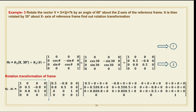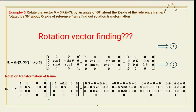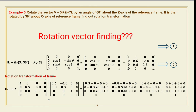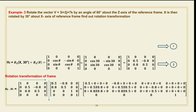So this is example number three. Rotate the vector v = 3i + 2j + 7k by an angle of 60 degrees about the Z axis of the reference frame. It is then rotated by 30 degrees about the X axis of the reference frame. Find out the rotation transformation.